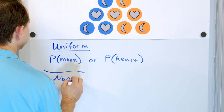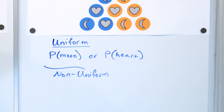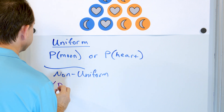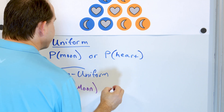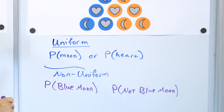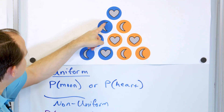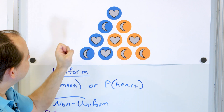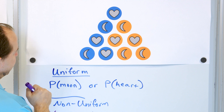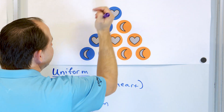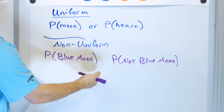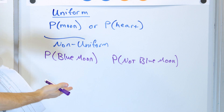For a non-uniform example: the probability of getting a blue moon versus the probability of not getting a blue moon. There are only two marbles with a blue moon, so the probability of a blue moon is two out of ten. The probability of not getting a blue moon is eight out of ten — there are eight marbles that are not blue moons. Those are not the same, so it's non-uniform. Two out of ten plus eight out of ten equals ten out of ten, which is one.